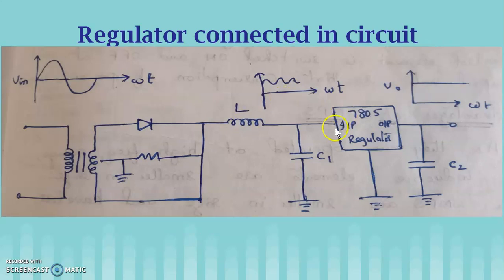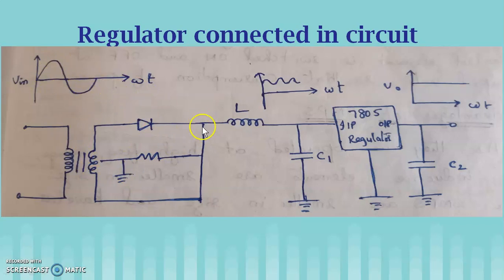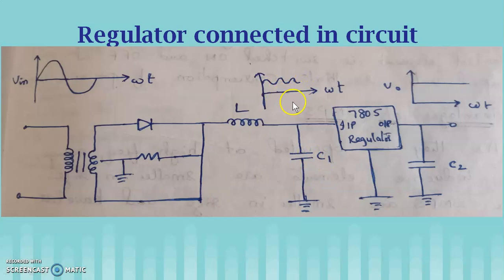This is how a voltage regulator is connected in a circuit. You can see here a half wave rectifier circuit, the input of which is AC and it gives a pulsating output. This is given to a filter circuit — an LC circuit filter — which reduces the ripples in the rectified output. This is then given to a 7805 regulator which gives a constant output voltage without any disturbance.